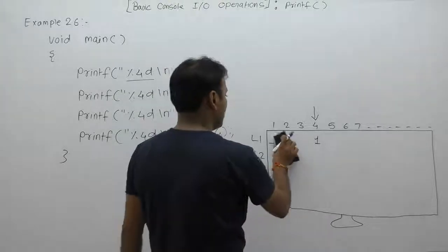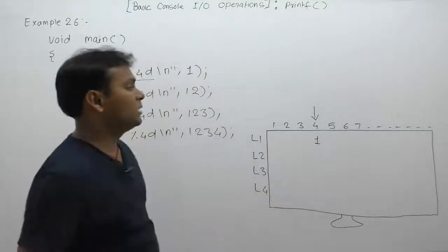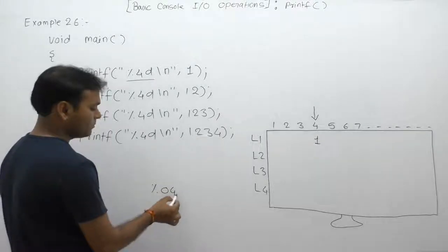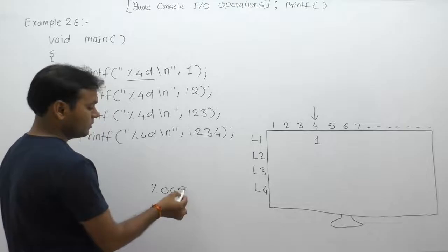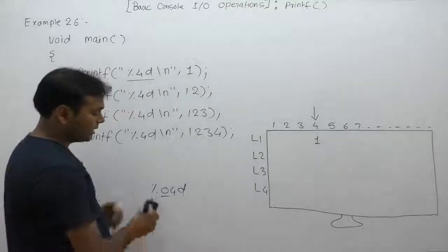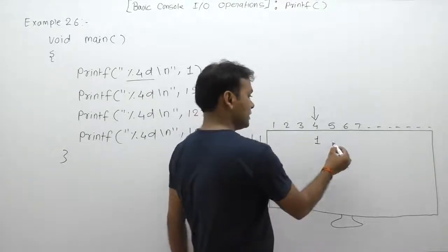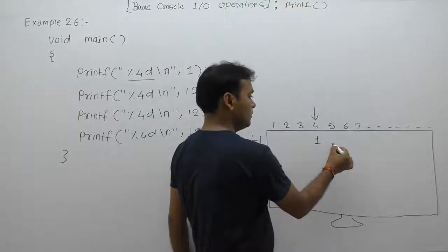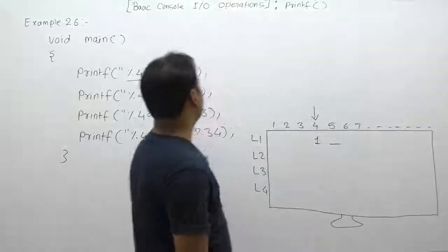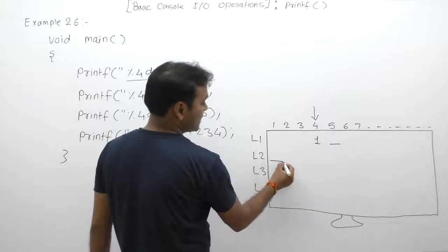The remaining positions are filled with the default padding symbol, which is a space. If you want to use zero as the padding symbol, use the format `%04d`. In that case the default padding symbol becomes zero. After printing the number in a field of four-width positions, the cursor moves to the fifth position, but due to the `\n`, the cursor moves to the first position of the next line.